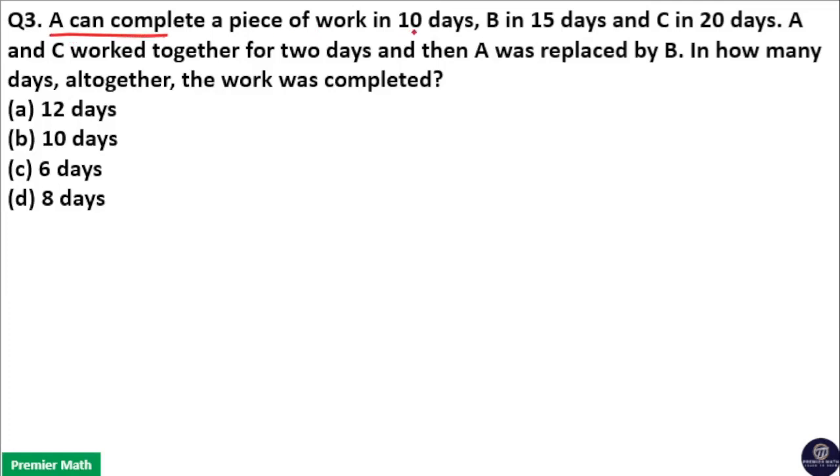A can complete a piece of work in 10 days, B in 15 days, C in 20 days. A and C worked together for 2 days and then A was replaced by B. In how many days altogether was the work completed?